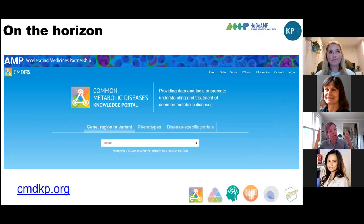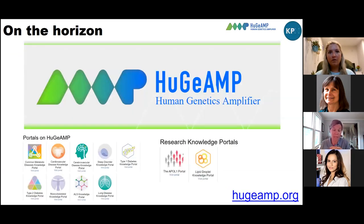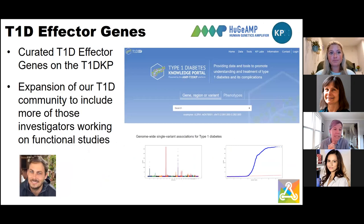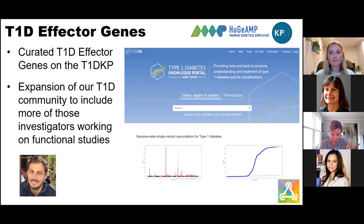On the horizon for not only the AMP CMD portal but for the broader platform — both the portals for common metabolic disease and other complex diseases — here are a couple of highlights before I turn it over to our main speaker. First is effector genes, which tends to be our major wheelhouse and one of the things that differentiates us from many other large-scale resources. We have that for type 2 diabetes already on the portal, as well as for cardiovascular disease. Soon we're going to be working with Kyle and his team to represent a curated list of effector genes for type 1 diabetes, so look for that coming soon.